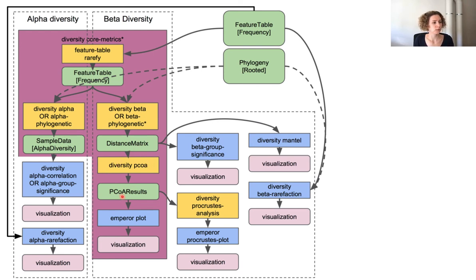And of these matrices, it calculates a principal coordinate analysis. And these results can then be visualized with an emperor plot. So you already see how many different artifacts this pipeline is automatically generating to us and also how central it is because all of these artifacts can later be used in different analysis in QIIME2.